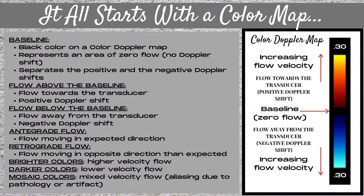First of all, Doppler all starts with a color map. Let's learn what all the colors on the map signify. Doppler looks at the frequency transmitted out into the tissue and compares it to the frequency transmitted back to the transducer after encountering a moving object. This shift in frequency is what gives us our Doppler information. So let's explore the color map.